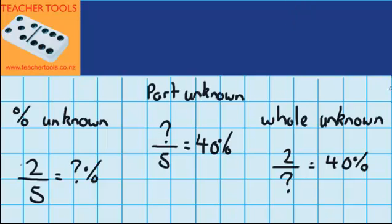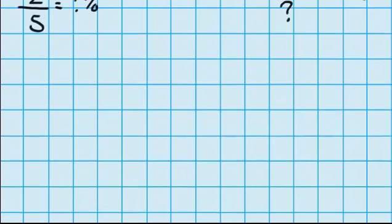Let's start with the percentage unknown questions. Let's imagine you're doing a test. You got 12 questions correct and that's out of 16 questions. And we want to work out as a percentage what that is. So we're trying to work out the percentage there. Well, we can display that question like this.